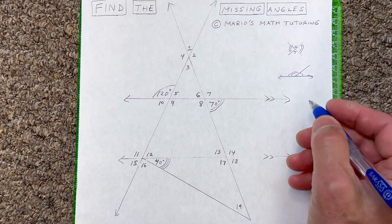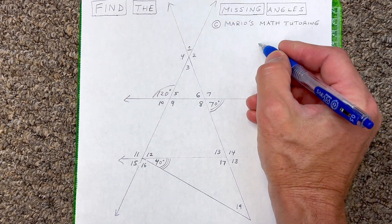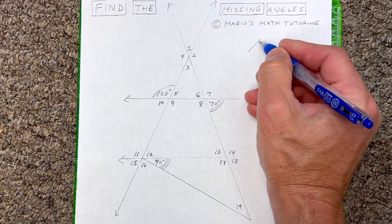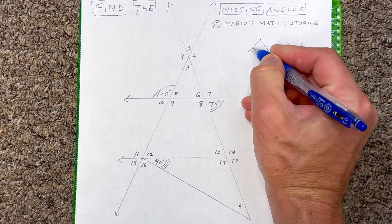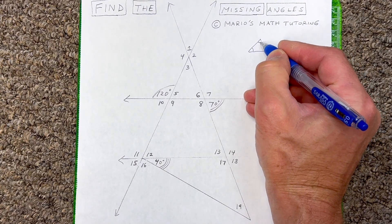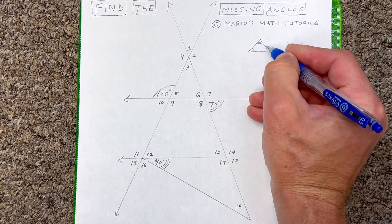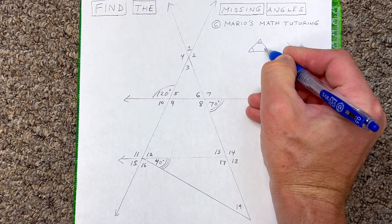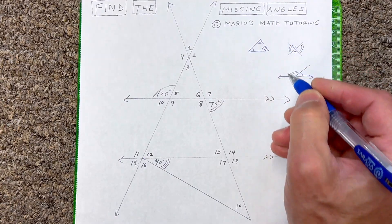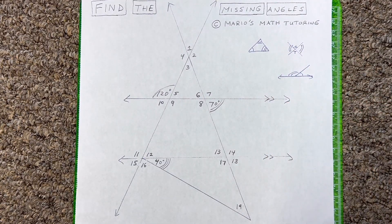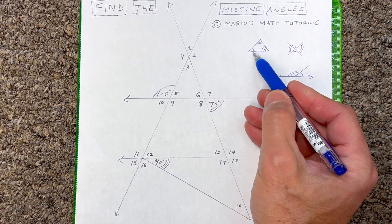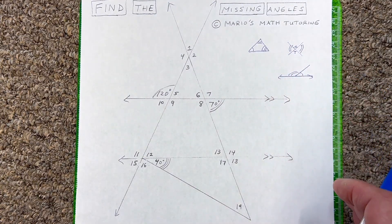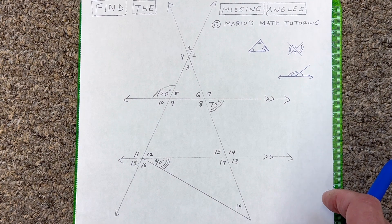The other thing to watch out for is that when you see a triangle, all the angles in a triangle add up to 180 degrees. So if you know two of the angles, you can find the third by subtracting from 180.